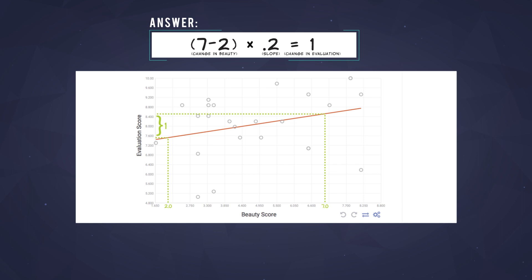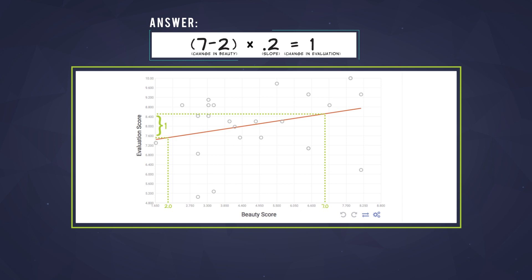You should have calculated the following change in the evaluation score by using either the slope in the formula or reading it off the regression line. And if you got it wrong, no big deal, go back, just try it again.